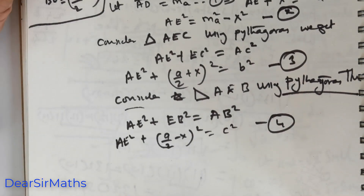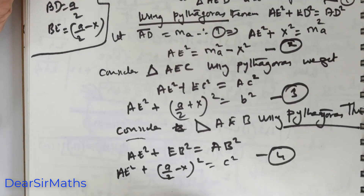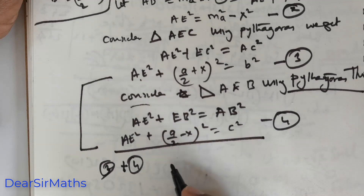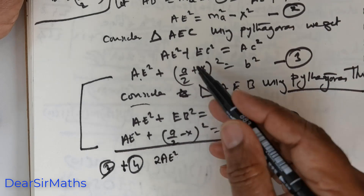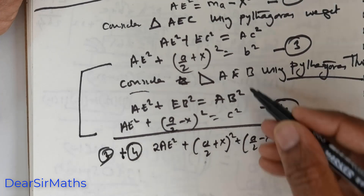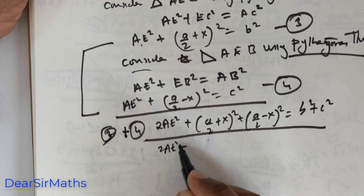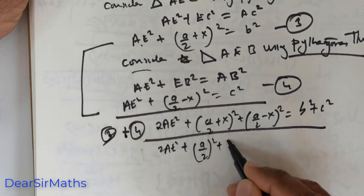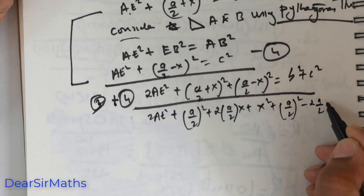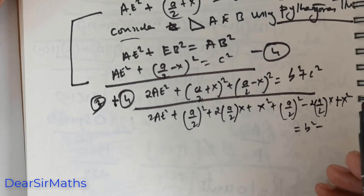What I will do is connect and add equation 3 with equation 4. So adding them: AE squared plus AE squared gives 2 times AE squared, plus (A over 2 plus X) squared plus (A over 2 minus X) squared, equals B squared plus C squared. Expanding: A over 2 squared plus 2·(A/2)·X plus X squared, plus A over 2 squared minus 2·(A/2)·X plus X squared, equals B squared plus C squared.